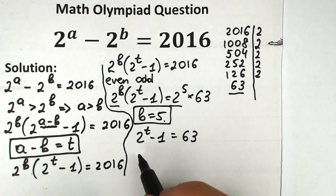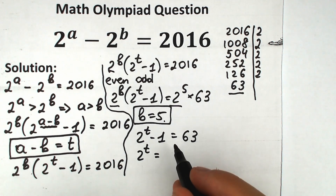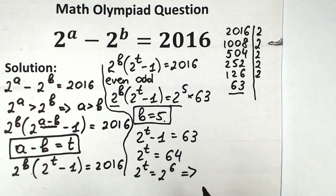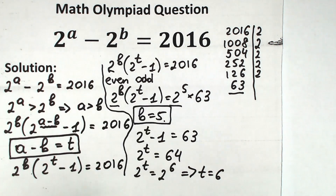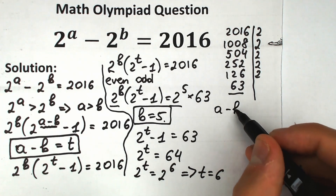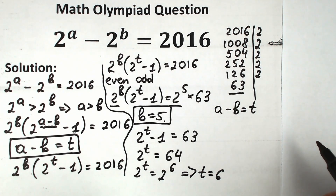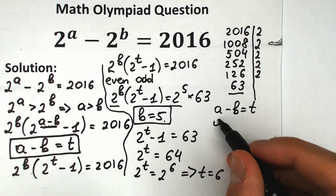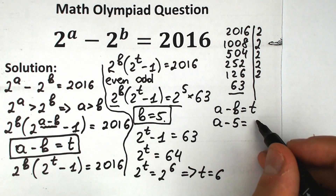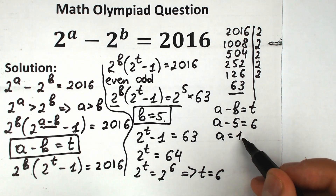Bringing the minus 1 to the right-hand side gives 2 to the power T equals 64, which is 2 to the power 6, so T equals 6. Going back to our substitution A minus B equals T: we have A minus 5 equals 6, therefore A equals 11.